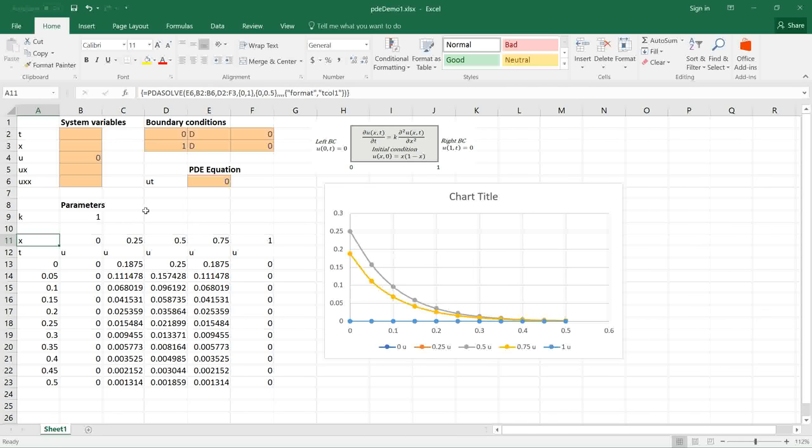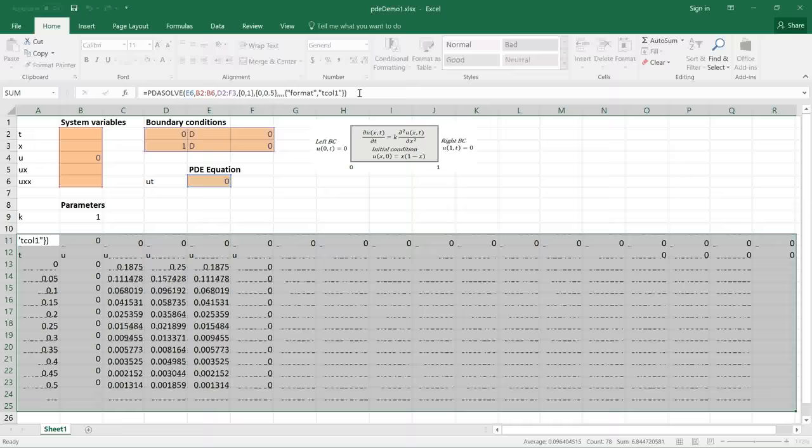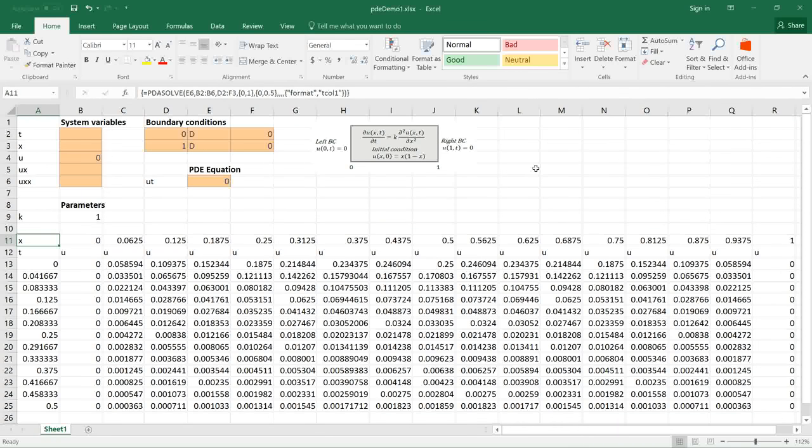I would like to demo a few more options on how to control the output solutions. I'm going to enlarge the solution array and run again. As you can see the solution includes more data points for T and X equally spaced between the interval limits.